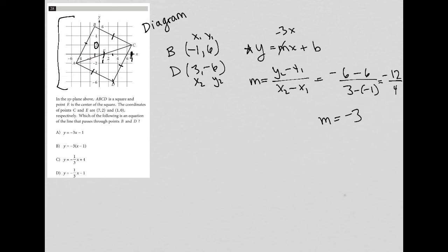So that's negative 3X plus. And then, so let's rewrite this, Y equals negative 3X plus B. So then I'm going to replace X and Y with one of my ordered pairs. It doesn't matter which one.